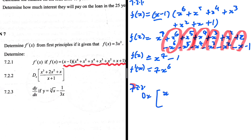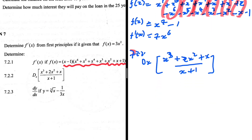That's 7.2.1. For 7.2.2, we need d/dx of (x cubed plus 2x squared plus x) divided by (x plus 1). Something in the numerator should cancel with the denominator. Let's take x as a common factor on the numerator, giving x times (x squared plus 2x plus 1).